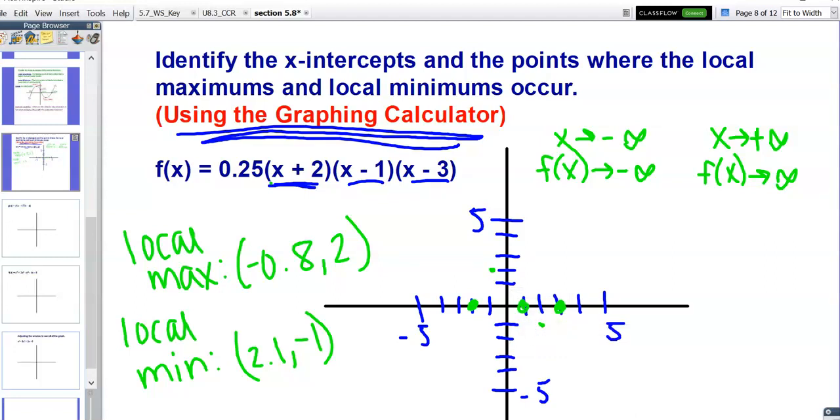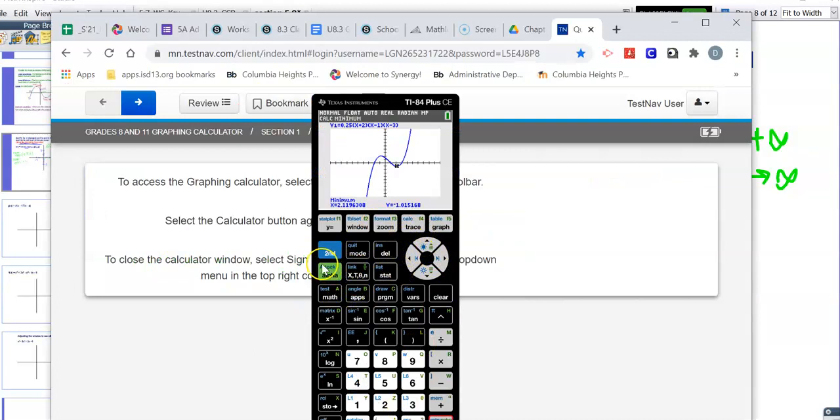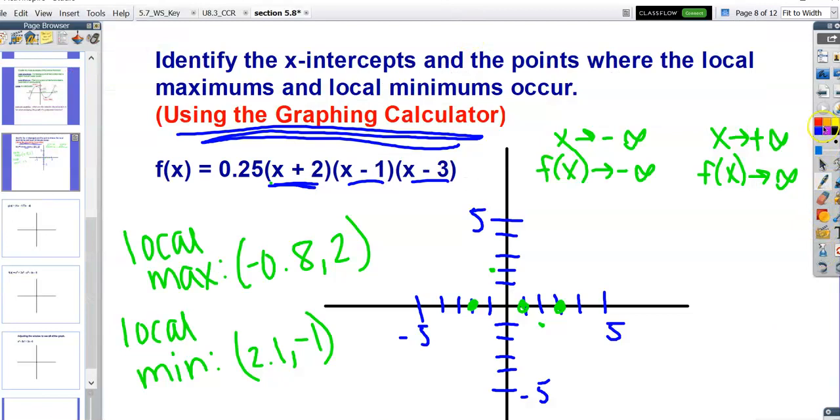Now that we have the x-intercepts and local maximum minimum, we can calculate the y-intercept as well. If you go to second calc, you can choose the option to calculate a value. If you select when x equals 0, it will estimate a value for y, which is 1.5. So when x is 0, y is 1.5. That's our y-intercept. One more bit of information for our graph: 0, 1.5.